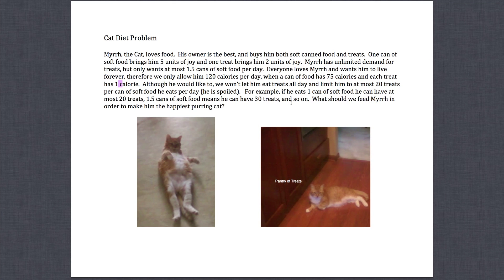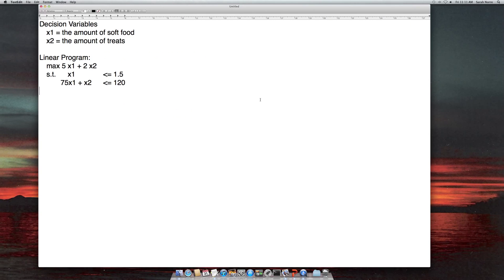Our next constraint here is we're saying we're limiting the amount of treats he has by the number of soft food. So here I say 1 can of soft food means he can have 20 treats, 1.5 cans means he can have 30 treats. So this is a different type of constraint than what we've seen in class. It has a positive slope rather than a negative slope. But what we're saying here essentially is that the number of treats, so x2, has to be less than or equal to 20 times x1, because if you had one can of soft food, the most amount of treats you can have is 20 there.